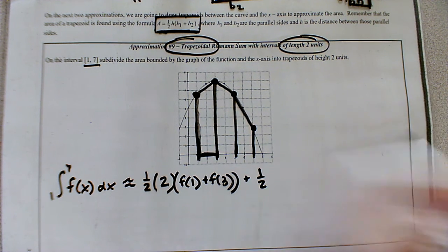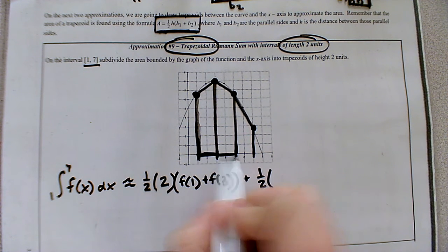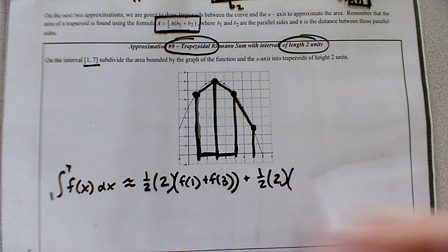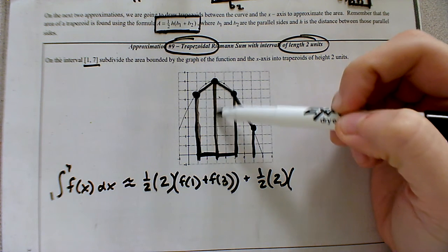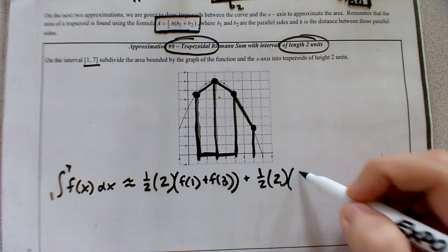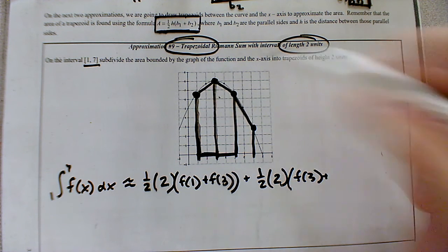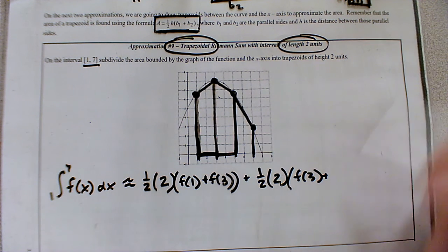We're going to repeat the process for the other two. So one half, the height is two, and then the sum of the bases. In this trapezoid, we have the base at the x value of three, and then the base from the x value of five.